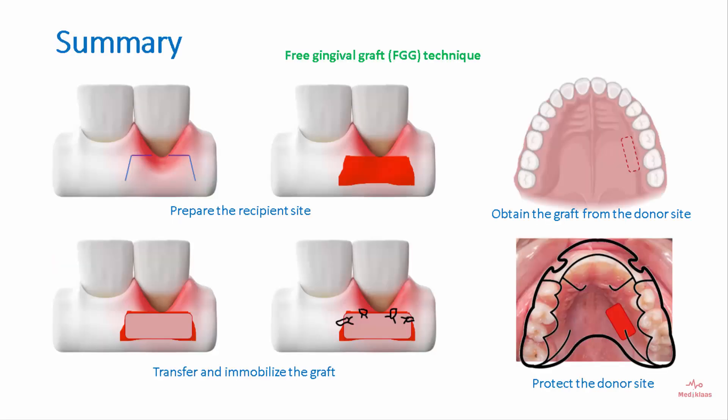To summarize, free gingival graft harvesting involves four steps: preparation of the recipient site, obtaining the graft from the donor site, transfer and immobilization of the graft, and protection of the donor site.